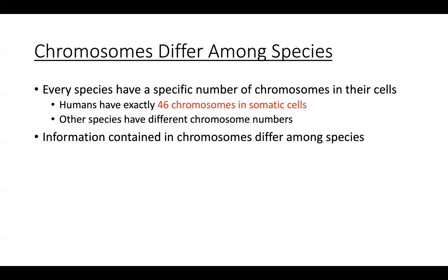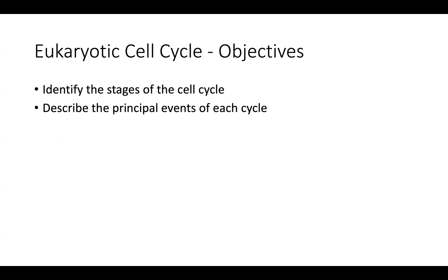Different species have a different number of chromosomes, and the information contained in each of those chromosomes can be different from species to species. That was a whole lot of background information — now let's look at the mechanism of how this happens.